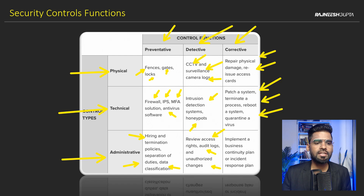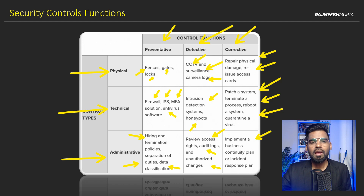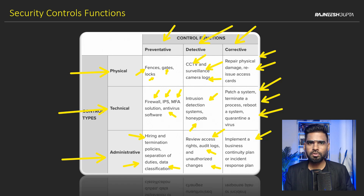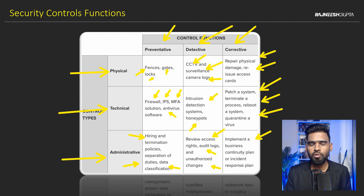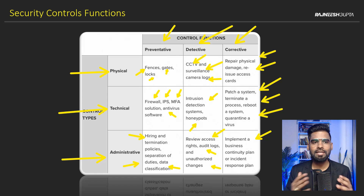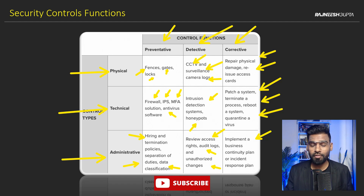Finally, the administrative corrective method is to implement a business continuity plan or incident response plan. This is very important. Business continuity plan includes disaster recovery as well. So if something goes wrong, everybody in the team knows what to do — the IT team knows what to do, the server team knows how to take backups, the network team knows how to change routing, and the firewall team understands what security changes they need to make. This is all about security control functions — preventive, detective, and corrective.